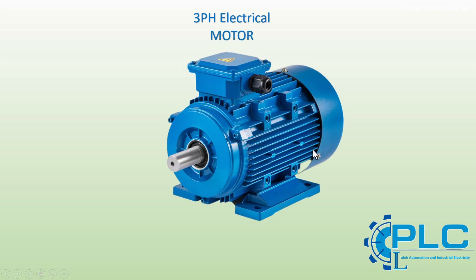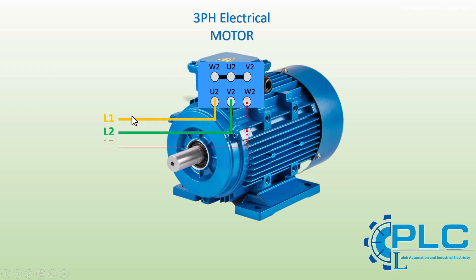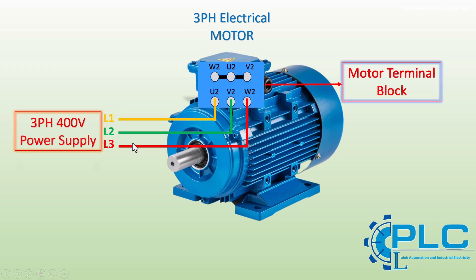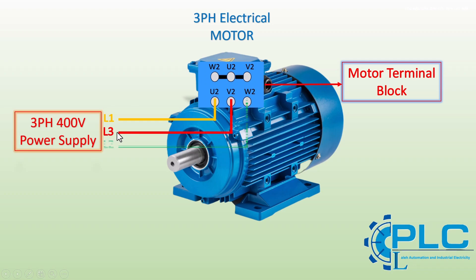A three-phase motor runs by receiving power through three separate wires, called phases. The direction of the motor's rotation depends on the order in which these phases are connected. To reverse the motor's direction, we simply swap two of the three-phase wires. This changes the sequence of the electrical current flowing through the motor, causing it to rotate in the opposite direction.